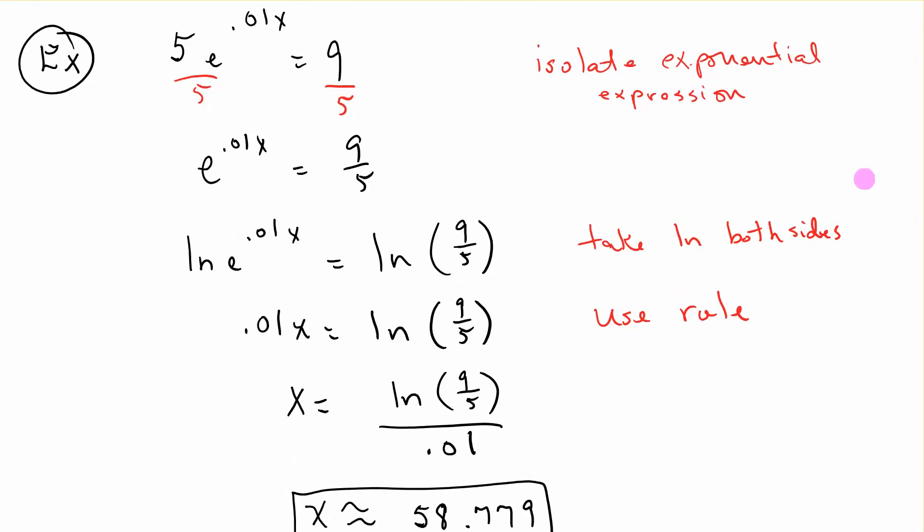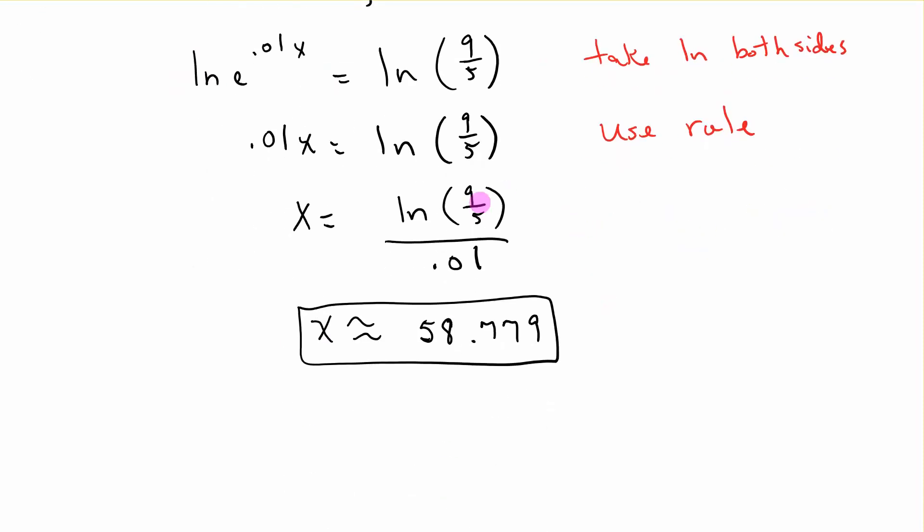This one, 5e to the .01x equals 9. We want to isolate the exponential expression. In other words, the 5 is not being raised to that, only the e. So we divide both sides by 5. And we have e to the .01x equals 9 over 5. Take the Ln of both sides. Ln and e cancel out. That's the other rule. So we have .01x equals Ln of 9 fifths. Divide both sides by .01. So this is your exact answer. If you do this calculation on your calculator, be sure you do this first and then divide by .01. Then you get the approximate answer.